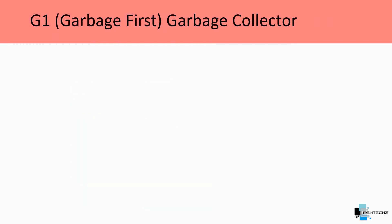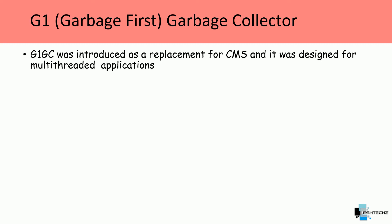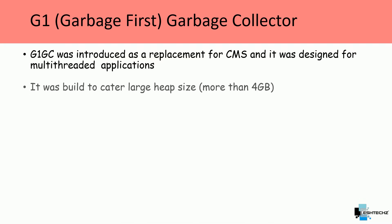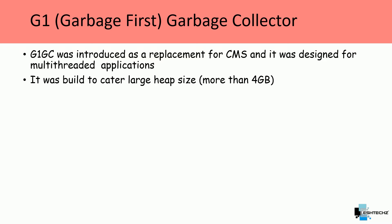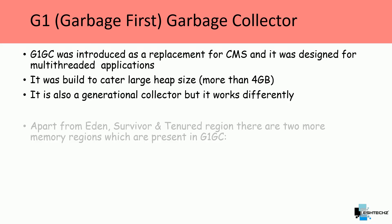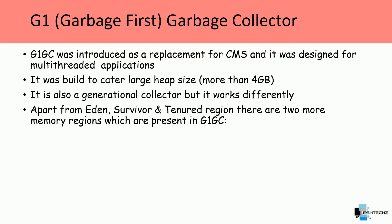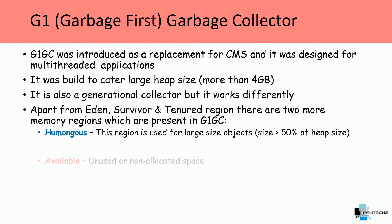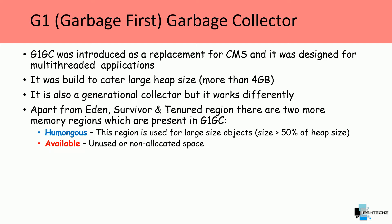The next one is G1GC, or Garbage First. G1GC was introduced as a replacement for CMS and was designed for multi-threaded applications. It was built to handle large heap sizes — more than 4 GB. It is also a generational collector but works differently. Apart from Eden, Survivor, and Tenure regions, there are two more memory regions in G1GC: humongous and available. Humongous is used for large objects — those exceeding 50% of your heap size. Available is unused or non-allocated space.